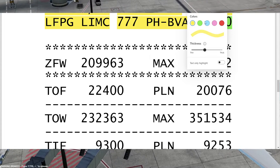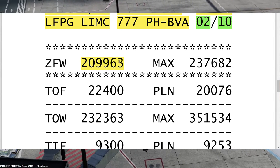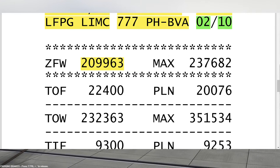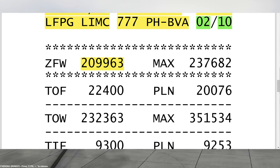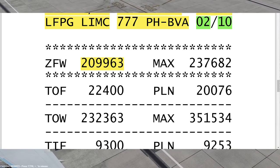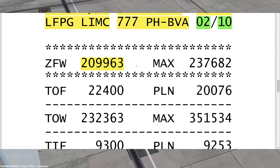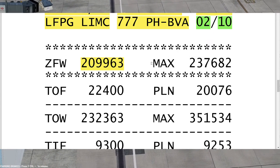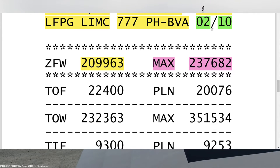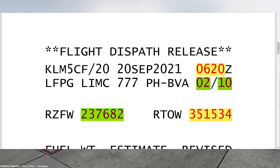The company will inform us the actual zero fuel weight. After finishing everything, they realize that instead of 210 tons, the actual zero fuel weight is 209,963 kg — just 47 kg less than 210 tons, so it was very accurate. The actual zero fuel weight is 209,963 kg, and on the right side we always have the maximum zero fuel weight: 237,682 kg. This information also comes from what we gave the company: 237,682 kg.